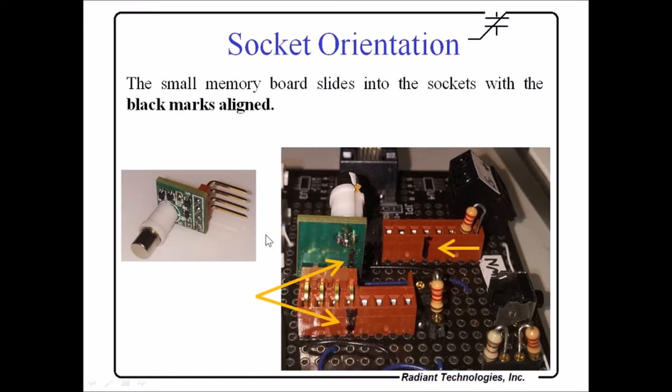To align the board, notice that this connector right here, this solder pad is square. That's pin 1. Pin 1 is always marked. So here's pin 1 on the back, pin 1 on the socket, pin 1 on this socket. So pin 1 should be aligned, the capacitor away from the op amps. Pin 1, 2, 3, 4. So always align the black marks.